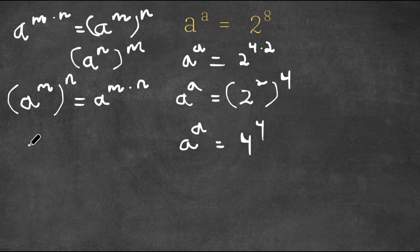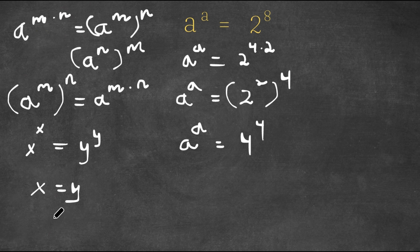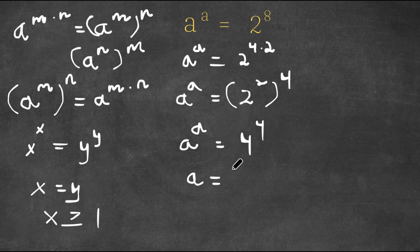Now, if we have something in the form x to the power of x is equal to y to the power of y, this means that x is equal to y, as long as x is greater than or equal to 1. So in this case, a is equal to 4.